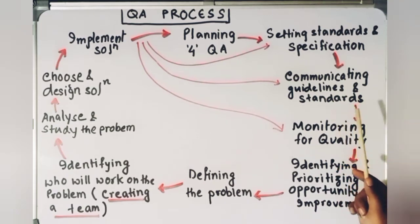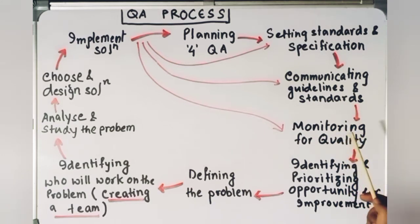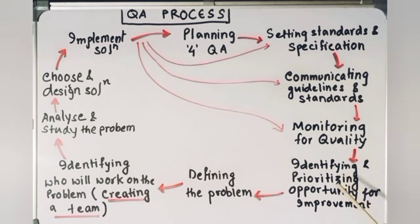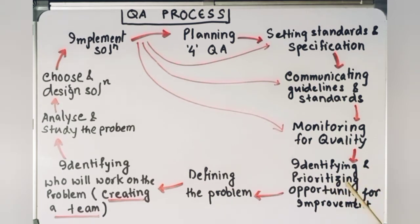Next, we come to monitoring the quality of your standards — you will be looking at the quality of the products. After monitoring, the next step is identifying and prioritizing opportunities for improvement. You will look at the quality of your products and identify where you can improve; those will be your opportunities for improvement.